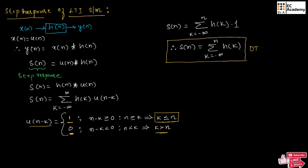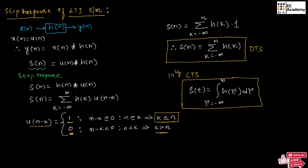Similarly, for the continuous time system, we can write S of t is equal to the integration from tau equals minus infinity to t of H of tau d tau. So the step response of the LTI system for a continuous time system is the running integral of the impulse response H of t. In summary, the step response is the running sum of the impulse response for a discrete time system, and the running integral of the impulse response for a continuous time system.